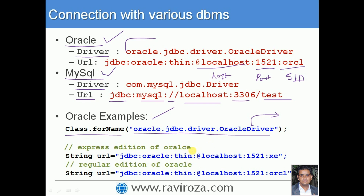There are distinct URLs for different editions of Oracle. For the regular JDBC URL, the format is: jdbc:oracle:thin:@localhost:1521:SID. For the Express Edition of Oracle (also called XE or Oracle XE), the SID is XE. For the regular editions such as 10g, 11g, or 12g, you use the corresponding SID for that installation.